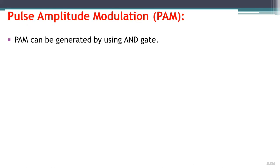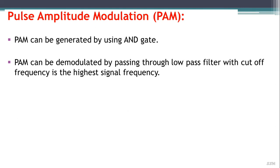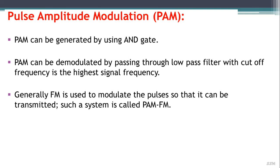Pulse amplitude modulation, or PAM, can be generated using an AND gate. PAM can be demodulated by passing through a low-pass filter with a cutoff frequency higher than the signal frequency. Generally, FM is used to modulate the pulse so that it can be transmitted; such a system is called PAM-FM.